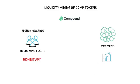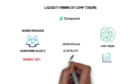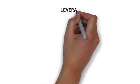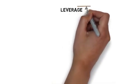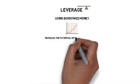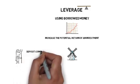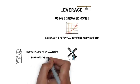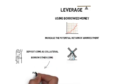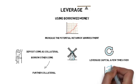COMP liquidity mining got super popular and was pretty much a catalyst for the wider spread of yield farming. Besides liquidity mining, leverage is another element that makes ultra-high returns possible. Leverage is a strategy of using borrowed money to increase the potential return of an investment. In the yield farming world, farmers can deposit their coins as collateral to one of the lending protocols and borrow other coins. They can then use the borrowed coins as further collateral and borrow even more coins. By repeating this procedure, farmers can leverage their initial capital a few times over and generate even greater returns.